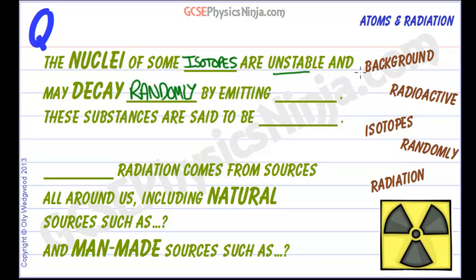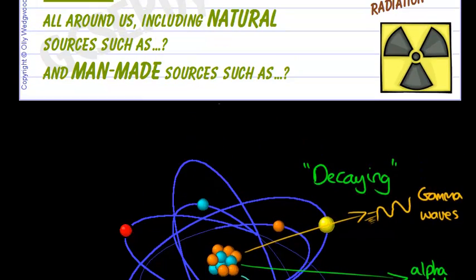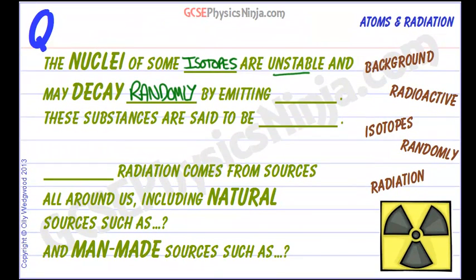What do I mean by randomly? Well, we can't affect this nuclear decay, this nuclear radiation emission. We can't heat the atom up—it won't make any difference—or we can't predict when it's going to spit out an alpha particle. It might just happen tomorrow, it might happen now, it might happen in a thousand years. We don't know. So that's what's meant by random, and that's a classic exam question actually.